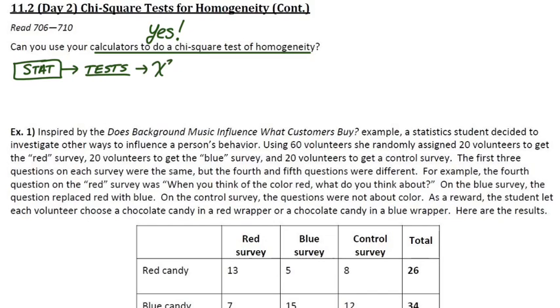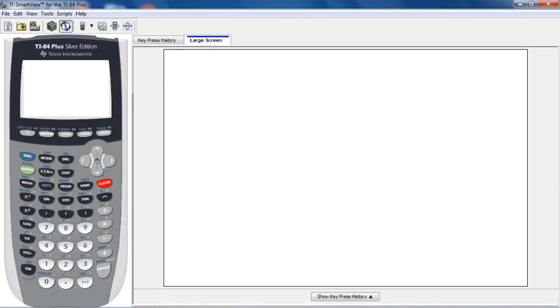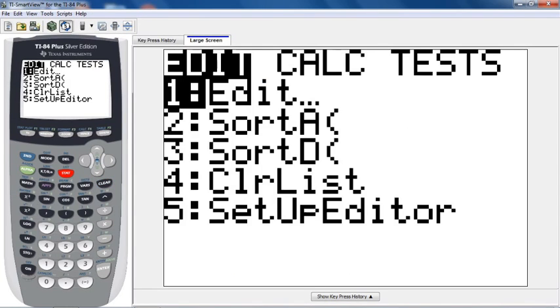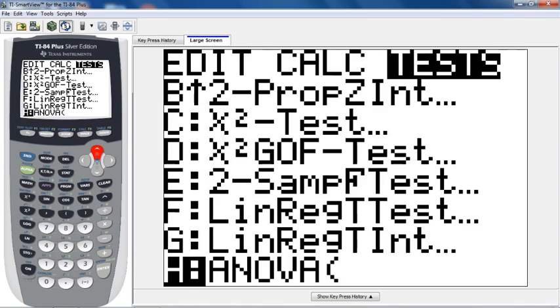So if you hit stat, tests, and then chi-square tests, the more general version here, that's what we're going to use for homogeneity. So on my calculator here, if I go to stat, over to tests, there's two chi-square options. There's either chi-square tests, which that's the one we want, or chi-square goodness of fit test. That's the more basic one for a one-way table from the last section.